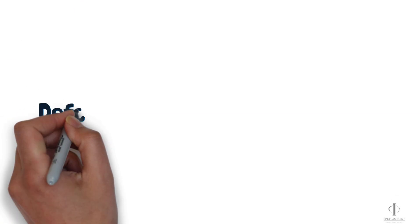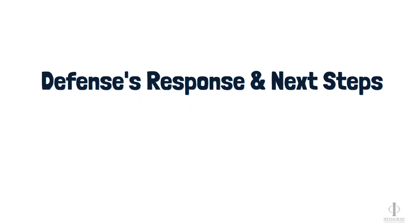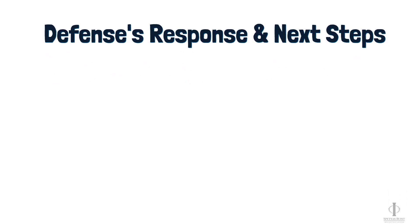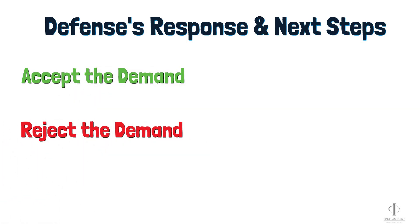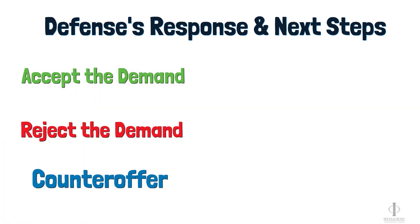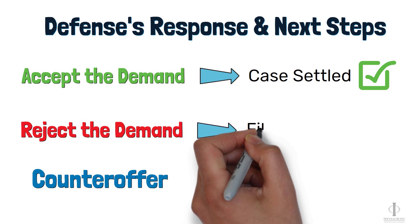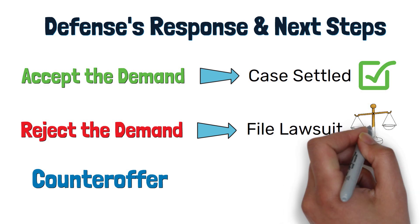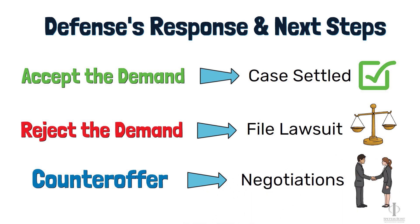Now let's talk about the defense's response and the next steps. The defense will usually respond to the demand in one of three ways: they'll accept the demand, they'll reject the demand, or they'll give us a counteroffer. If they accept the demand, the case is settled and after that we can work to close it out. If they reject the demand outright, we may need to file a lawsuit and push the case into litigation. If they give us a counteroffer, we can move into negotiations and attempt to reach a settlement.